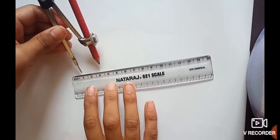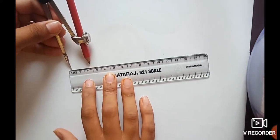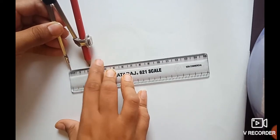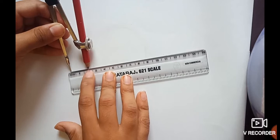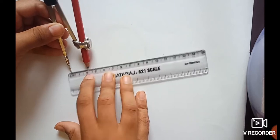First of all, take a compass and a scale. Measure the compass pencil and needle up to 2 centimeters, minimum or maximum 2 centimeters.